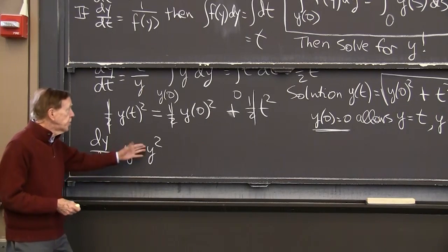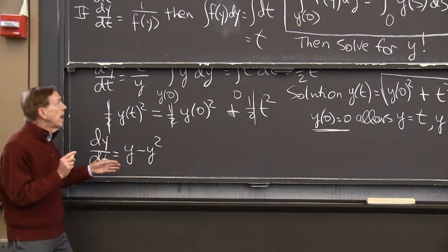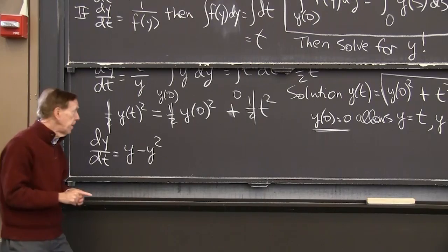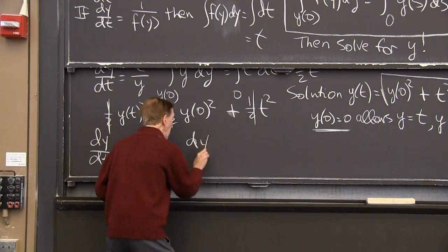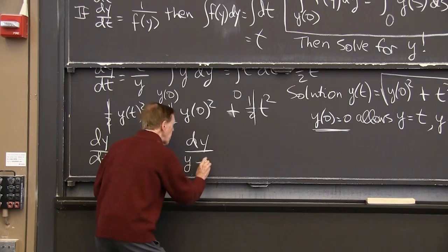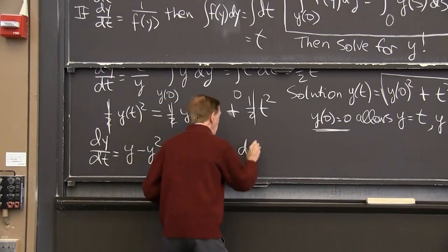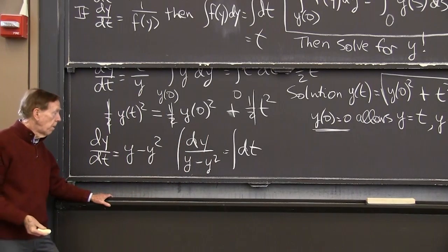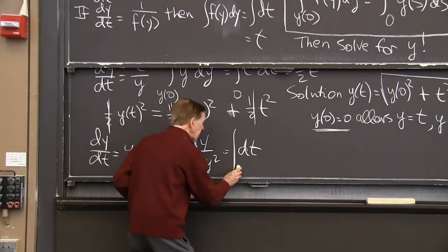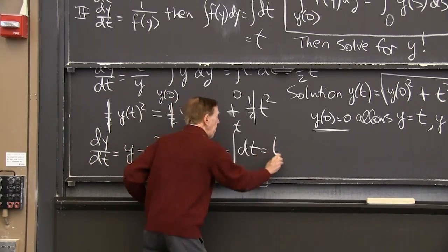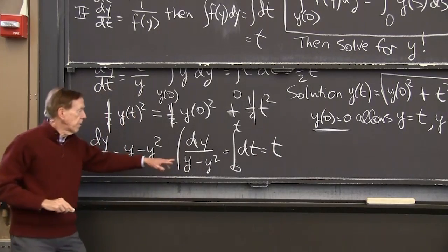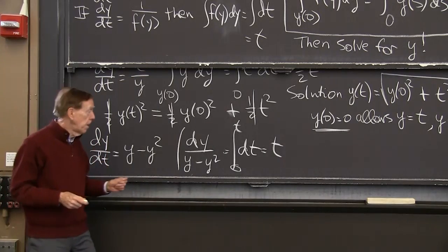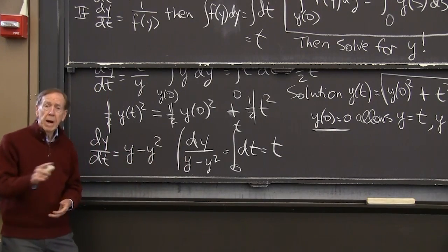OK. That's separable because the g of t part is 1. And what's the f of y? Remember, f of y, I want to put that on the y side. But it's going to show up in the denominator. So I have dy over y minus y squared equaling dt. And I have to integrate both sides to get the solution, y. Now, integrating the right-hand side is, of course, a picnic. I get t. But integrating the left-hand side, I have to either know how or look up or figure out the integral of 1 over y minus y squared.